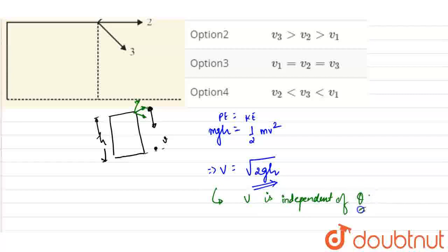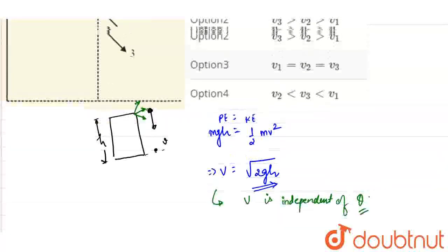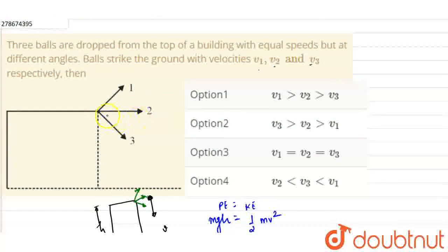So for the balls we consider, let us suppose theta 1 is this angle, theta 2 is that angle. Whether the ball is projected with theta 1 angle, horizontally, or with theta 2 angle, it will strike the ground with the same velocity. So v1 equals v2 equals v3. Option 3 is correct.